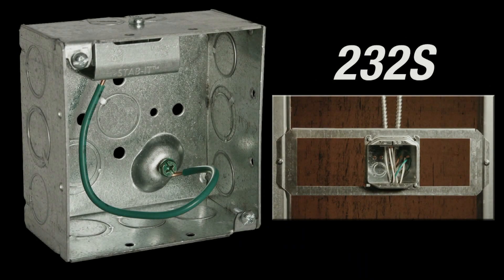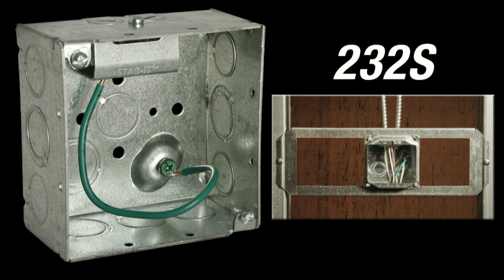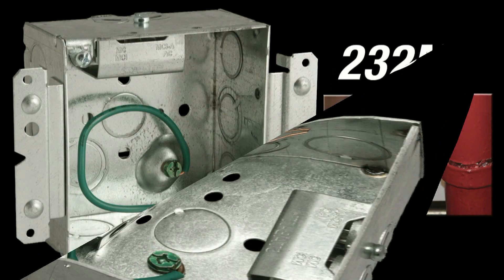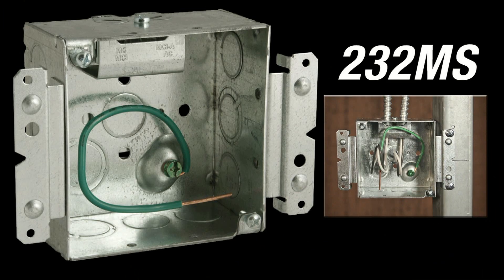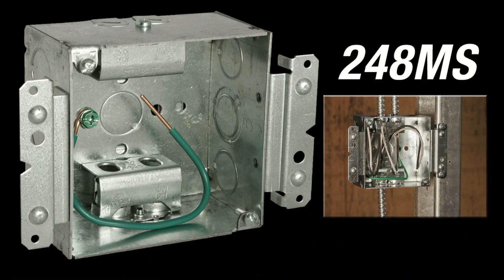Raco's series of Stabit boxes are available in seven different four-inch square box designs and three switch box designs to accommodate a variety of applications. The four-inch square Stabit boxes are all two and an eighth inch deep and available with one or two Stabit connectors. Each Stabit connector accepts two cables in sizes 14-2 up to 10-3 for most cable types, eliminating the need to carry numerous size and types of traditional connectors.